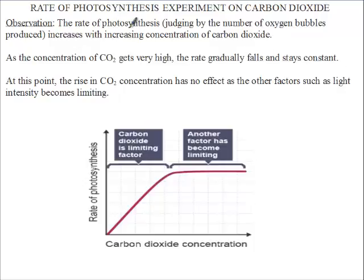Now let's see the observations that are going to be made after or during the experiment. The rate of photosynthesis increases with increasing concentration of carbon dioxide. We can see this by judging by the number of oxygen bubbles produced — the rate of photosynthesis increases with increasing number of bubbles. As the concentration of CO2 gets high, the rate gradually falls and stays constant.